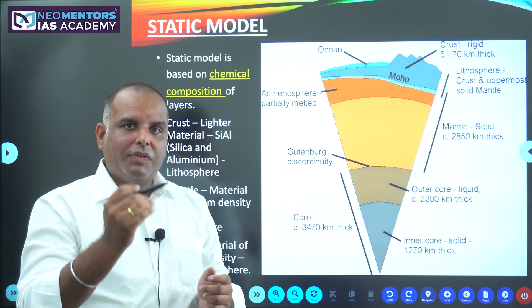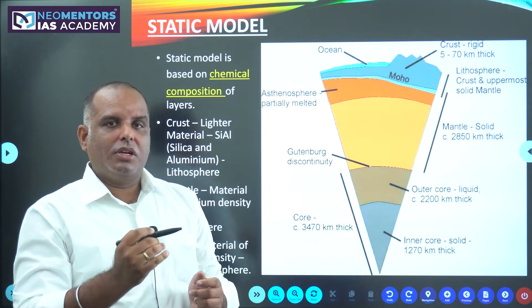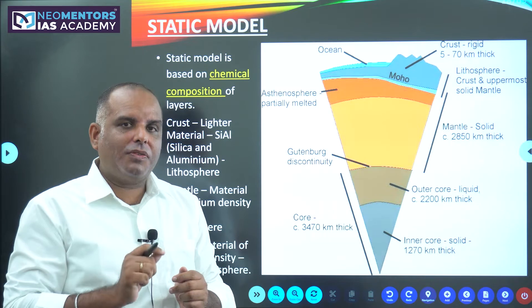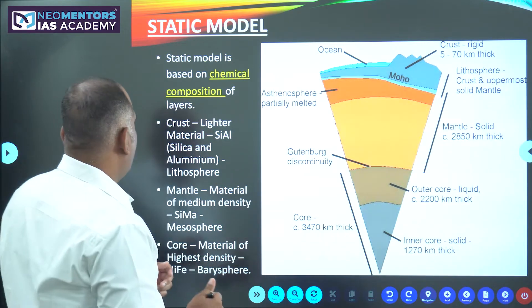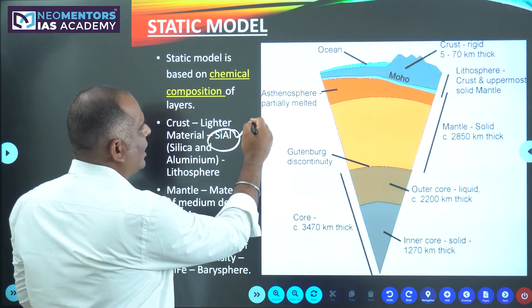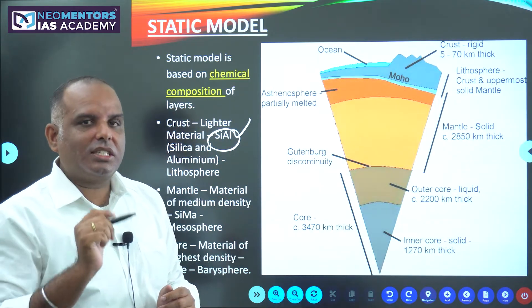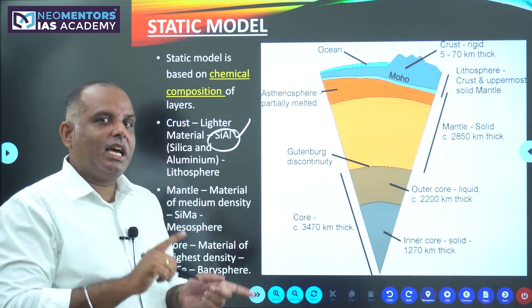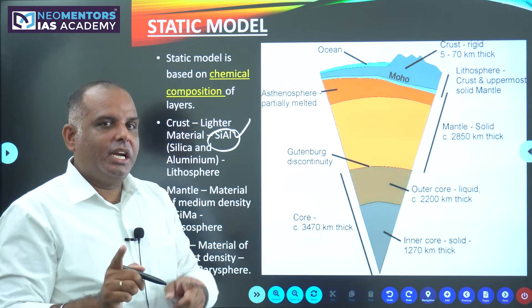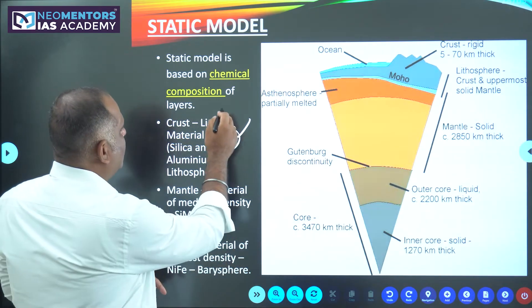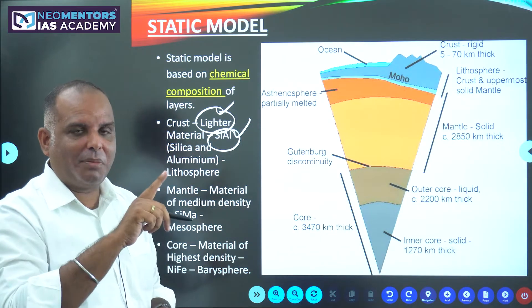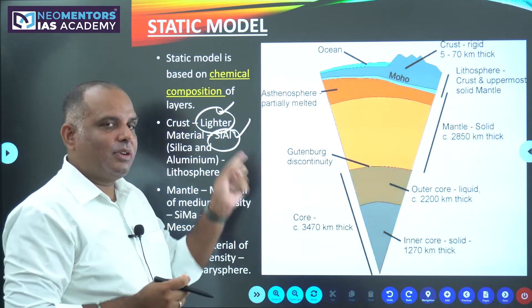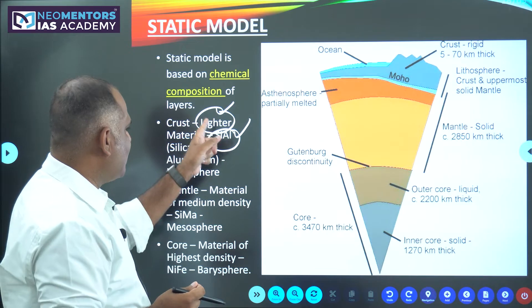So we have crust, mantle, and core. Crust is majorly made up of silica and aluminium — we call that SIAL. Since it has silica and aluminium, it is also lighter. Crust is made up of lighter material. We were talking about crust being the topmost layer, so it should be of lighter material, and that's why it contains both silica and aluminium.